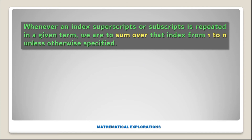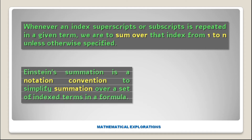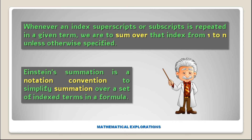Whenever an index — superscript or subscript — is repeated in a given term, we are to sum over that index from 1 to n unless otherwise specified. Einstein's summation is a notation convention to simplify summation over a set of indexed terms in a formula.